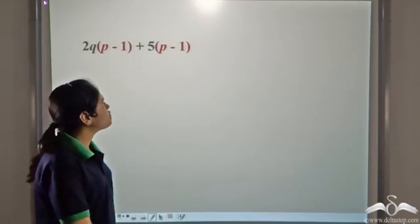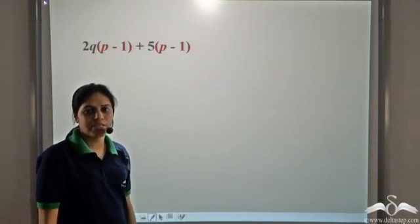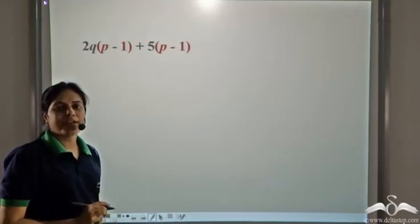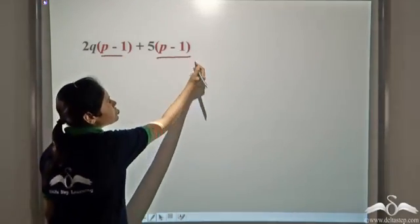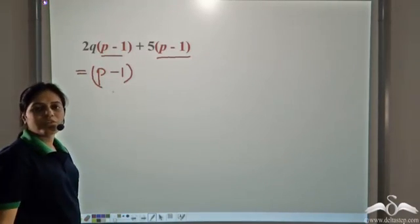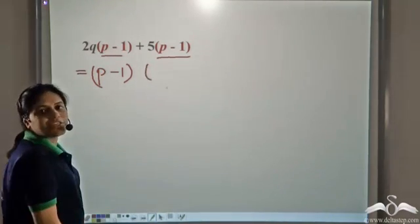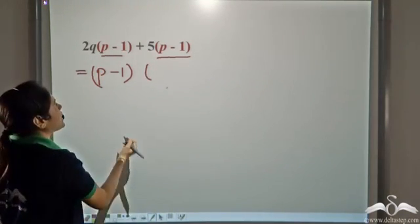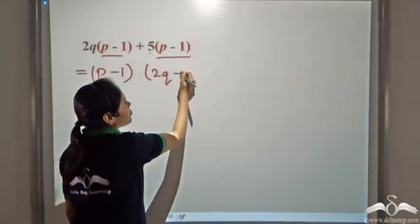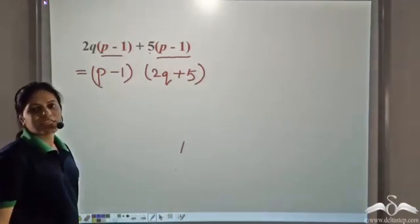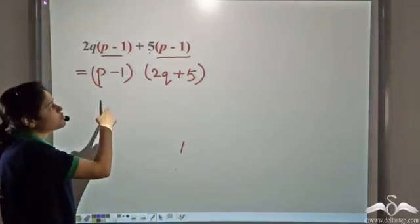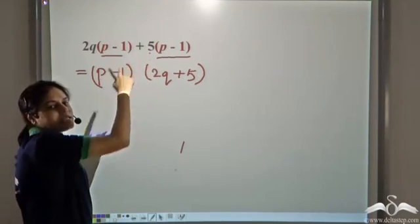We have already learned how to factorize expressions of this type. We consider the different terms of this expression and see what is the common factor. We have p-1 as a common factor between the two terms. So we take p-1 as common and write down the remaining parts within the brackets — 2q and 5. So this expression can be factorized as (p-1)(2q+5). These are the two factors of this expression.